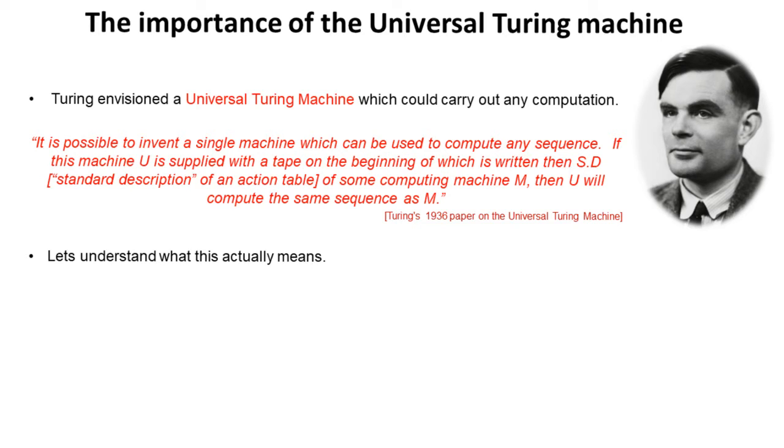Here's the actual extract from Alan Turing's 1936 paper on the universal Turing machine. It stated: 'It is possible to invent a single machine which can be used to compute any sequence. If this machine U is supplied with a tape on the beginning of which is written the standard description of some computing machine M, then U will compute the same sequence as M.'